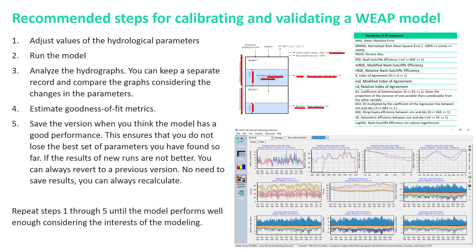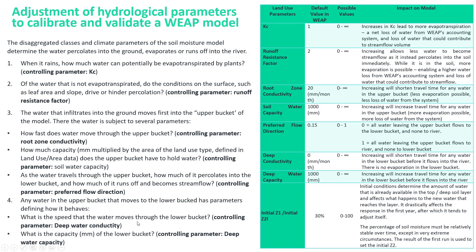The adjustment of the hydrological parameters should be made by analyzing the hydrographs. Each parameter has a greater influence on some specific processes. For example, the crop coefficient controls the evapotranspiration.